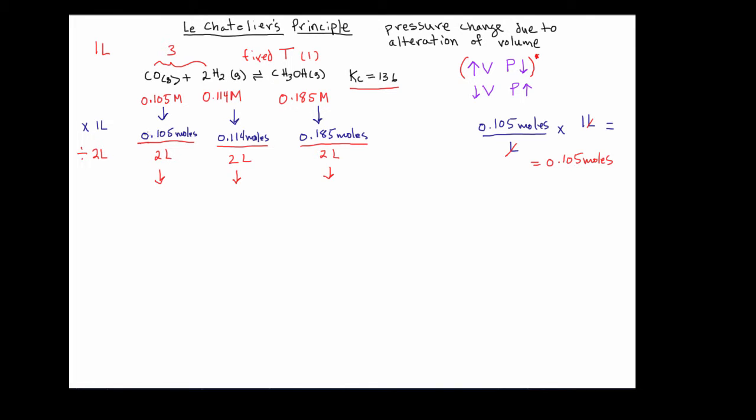And now our new molarity in each one of these cases is, so realize what we're doing is that we're essentially cutting these molarities in half. So the new molarity here is going to be 0.0525 for this one. The molarity for the hydrogen will be 0.057 molar. And the molarity for the product, the methanol, is going to be 0.0925.